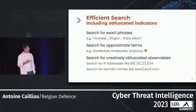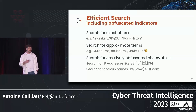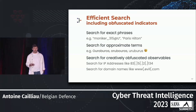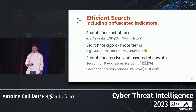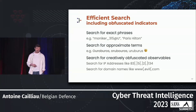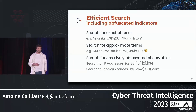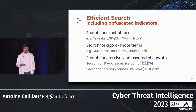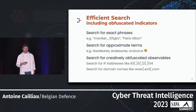As I mentioned, we have specific search needs. We want to search for exact phrases, sometimes for monikers. We want to search for approximate terms — for example, with names where every vendor comes with a variation on that specific name. We also want to search for obfuscated indicators. For example, if you have an IP address, you want to find the report that mentioned it even if it is obfuscated. And you want to find that efficiently and fast.